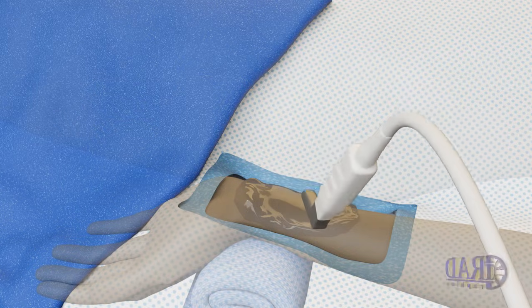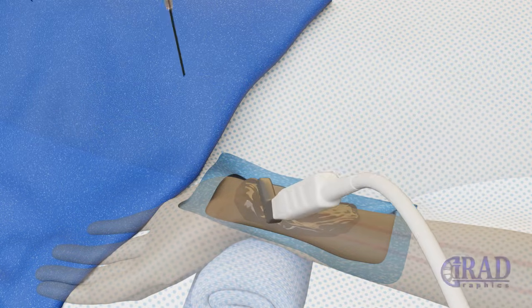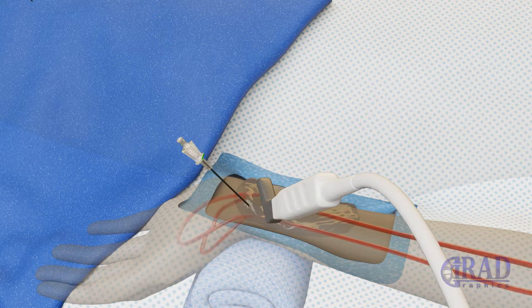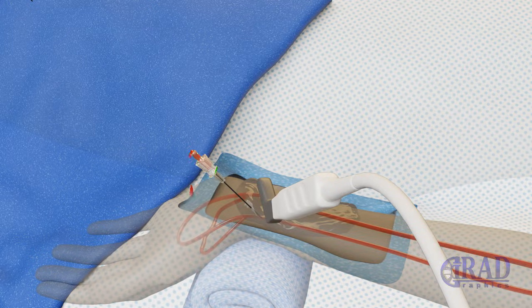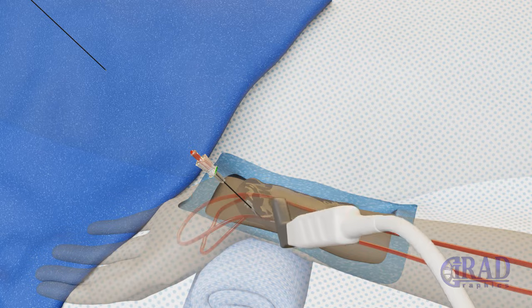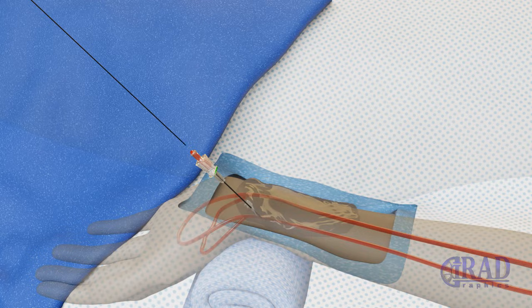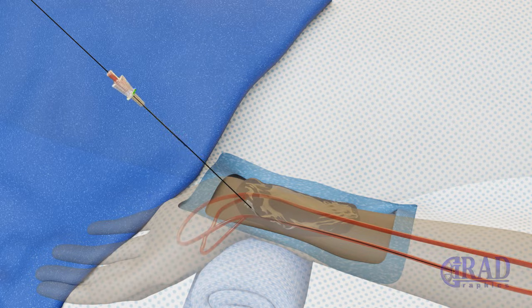As the first step, the left radial artery is accessed under ultrasound guidance using a micropuncture needle. Once blood return is noted, a microwire is advanced through the needle into the left radial artery. Then the needle is exchanged for a sheath.